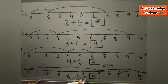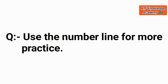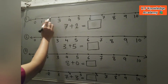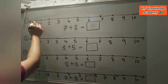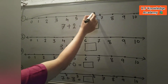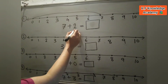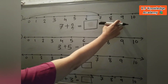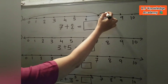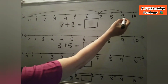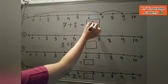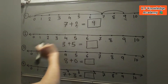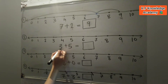So 6 plus 4 is equal to 10 — write down 10 in the box. Now use the number line for more practice. In this question, 7 plus 2 is equal to. We join 0 to 7 numbers, then add 2: 7 to 8 is 1, and 8 to 9 is 2. So we make a half circle — 7 plus 2 is equal to 9. Write 9 in the box.